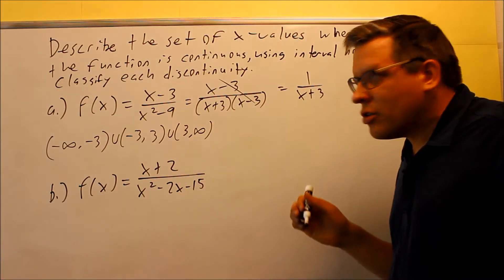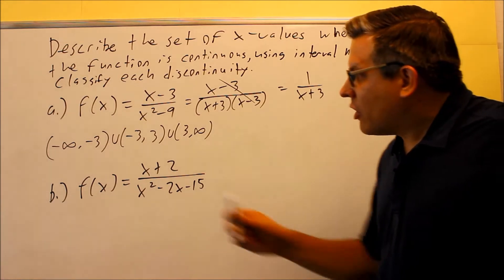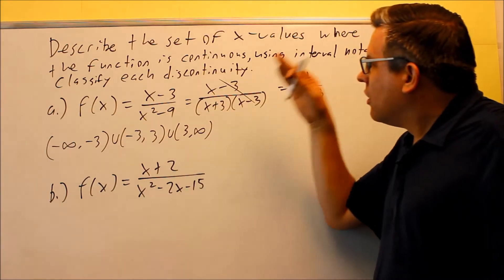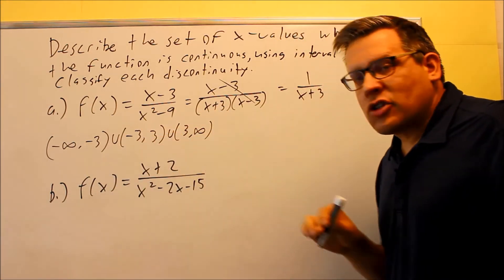So basically what that's saying is that you're including everything except for 3 and negative 3. Everything before it, in between them, and afterwards are included. So again, they only want the intervals of continuity here, so it's continuous on this particular interval.